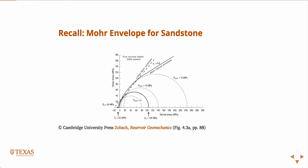If you recall, the true Mohr failure envelope is this: if you do a series of tests so that you get these different Mohr circles for different ratios of confining pressure to axial pressure, you get those different Mohr circles, and then the true Mohr failure envelope is the line that's tangent to all those circles.